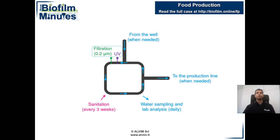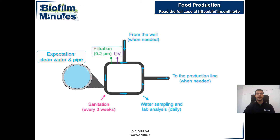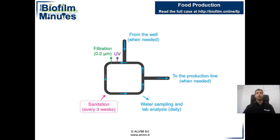The combination of these two physical treatments was expected to achieve 99.99% removal of bacteria, and thus both pipe and water were expected to remain clean. For this reason, the full chemical sanitation of the system was applied only every three weeks on a scheduled basis. This is a very common approach applied in several industrial sectors.